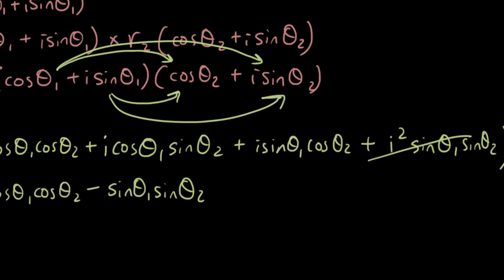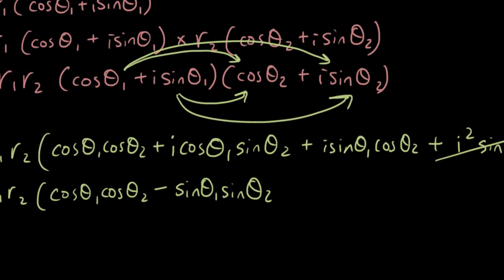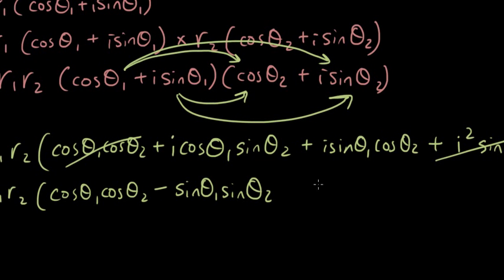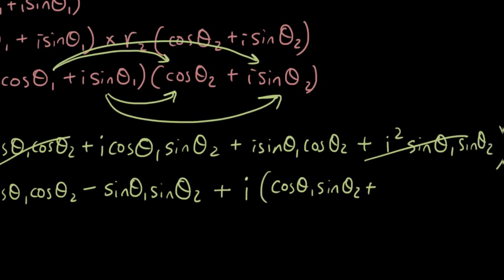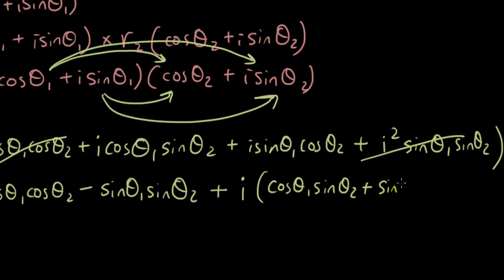So I'm going to make it minus sin θ1 sin θ2. So this part is done. What do I have left? I have plus these two terms, which I'm going to copy down, but I'm going to factorize it and write i at the front of the bracket, and then I'm going to put down cos θ1 sin θ2 plus sin θ1 cos θ2.